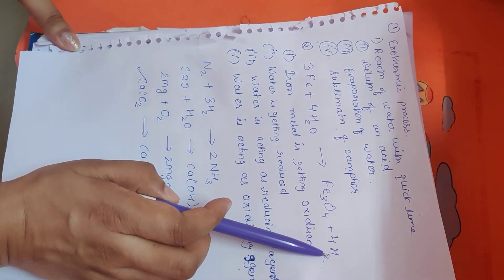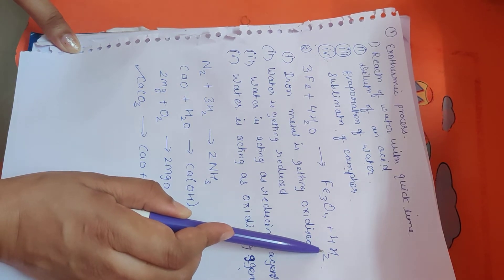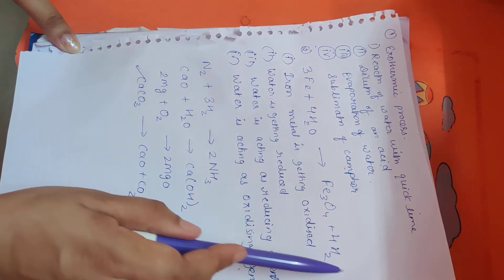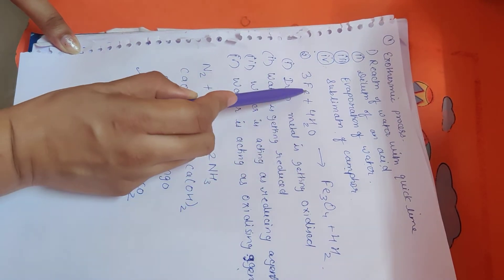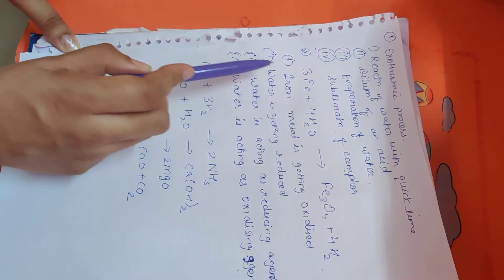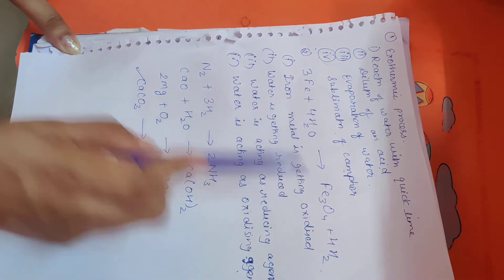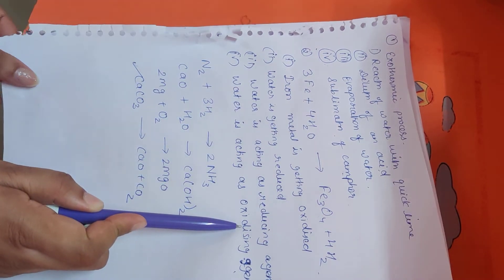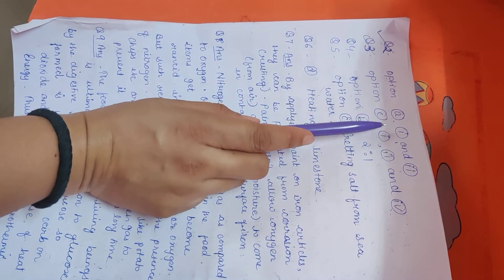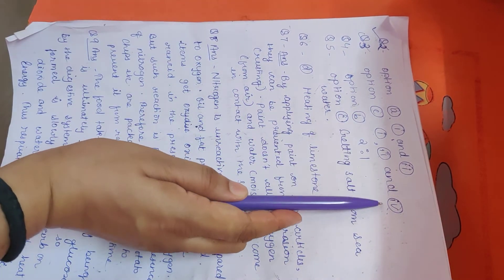And this water molecule H2O is getting reduced to H2. So I told you, I explained to you, the substance which gets reduced acts as an oxidizing agent. So here in this statement, this is also correct, that iron metal is getting oxidized. This statement is also correct, water is getting reduced. And the last statement is correct, water is acting as oxidizing agent. So the correct option is C, that involves 1, 2, and 4.